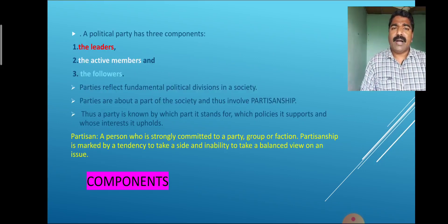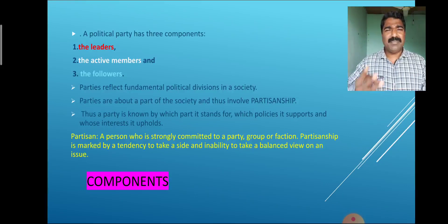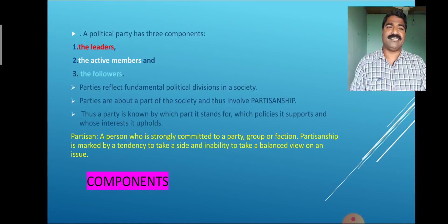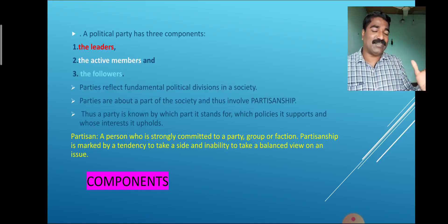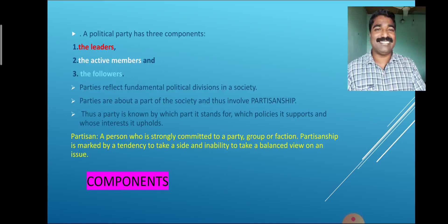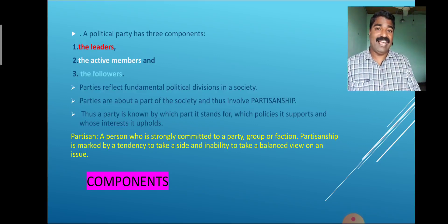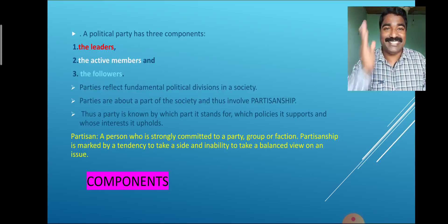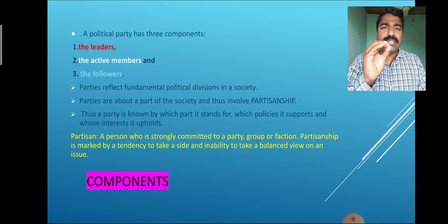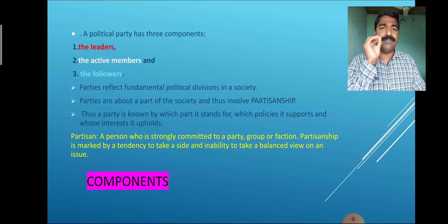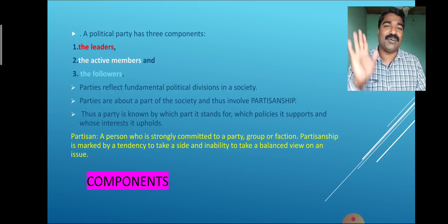Then we just see the components of political parties. There are three major components. The first one is the leaders. Then there are active members, and then the followers. These are the three important components of a political party: the leaders, the active members, and the followers.